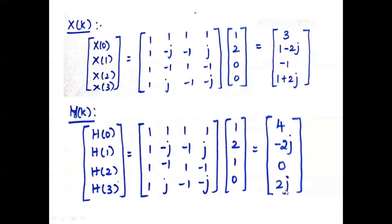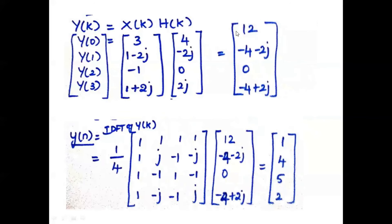The next step is to multiply these two outputs to find Y of k equal to X of k into H of k, element by element. We obtain the output as 12, minus 4 minus 2J, 0, minus 4 plus 2J. For this output we have to apply IDFT.